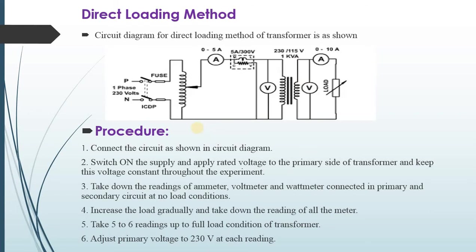Here is a simple method to conduct the direct loading test of a transformer. First, switch on the supply and apply rated voltage to the primary side of the transformer. Keep this voltage constant throughout the experiment — that means we have to keep primary voltage at 230V at each reading. Then take down the readings of ammeter, voltmeter, and wattmeter connected in primary as well as secondary circuit at no load condition. After that, increase the load gradually and take down the readings of all the meters. Take 5 to 6 readings up to full load condition of the transformer.